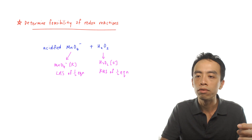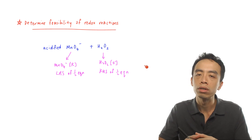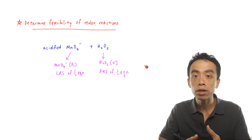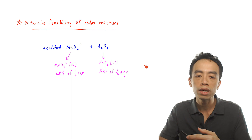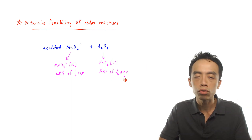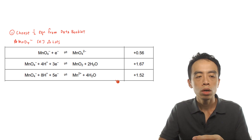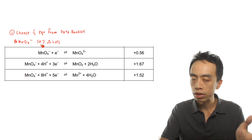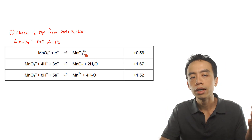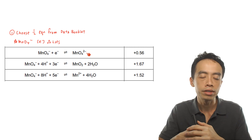The next thing we want to do is refer to the data booklet and choose the two relevant half equations involving permanganate as well as H₂O₂. Let's consider permanganate first. Since it undergoes reduction, it has to be found on the left-hand side of the half equation. These are the half equations involving permanganate where it is on the left-hand side.